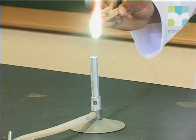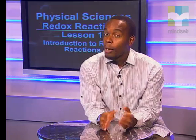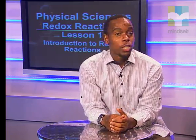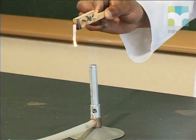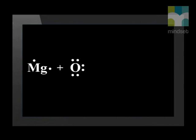Magnesium burns in oxygen with a bright white flame. When magnesium burns in air, it reacts with the oxygen in the air to form magnesium oxide. The reaction can be represented like this.